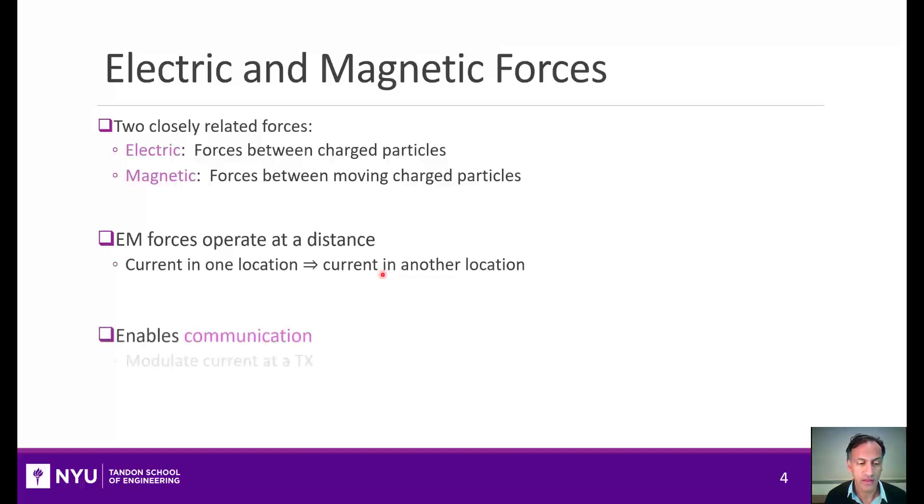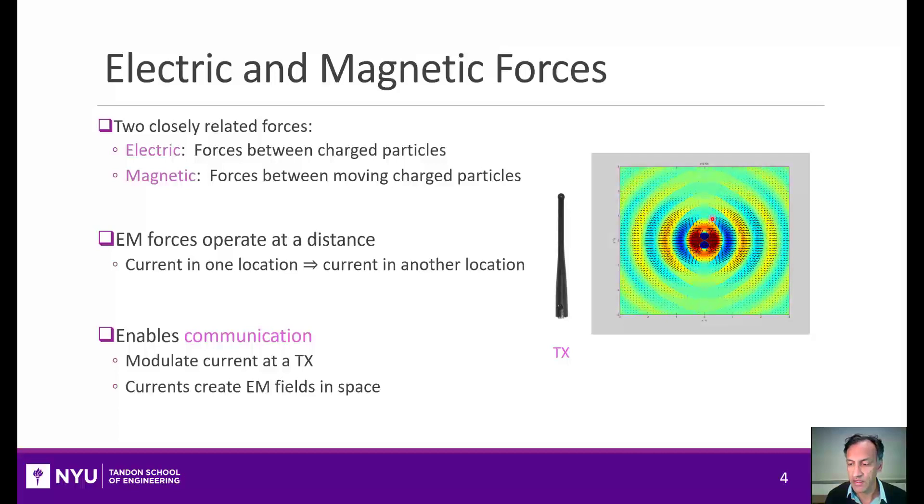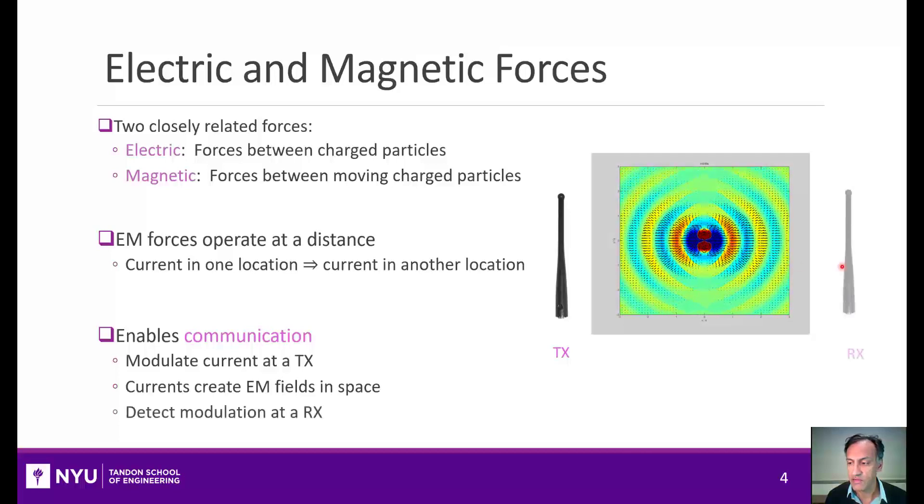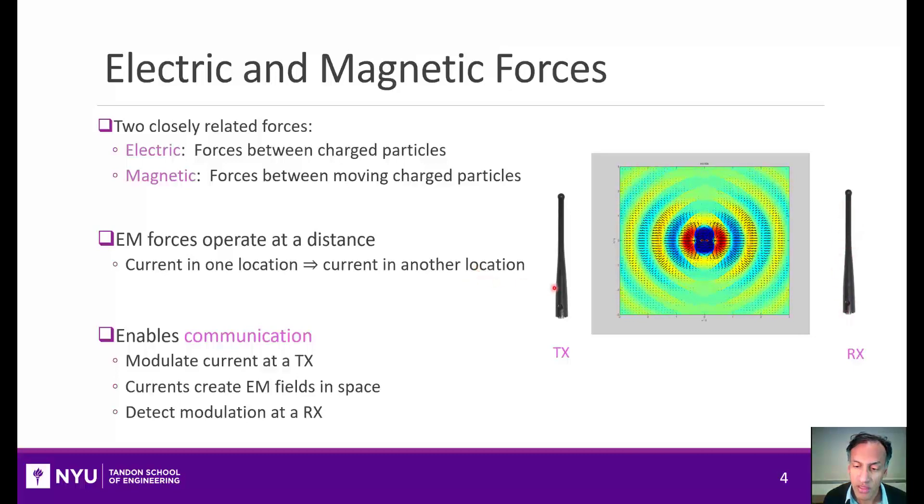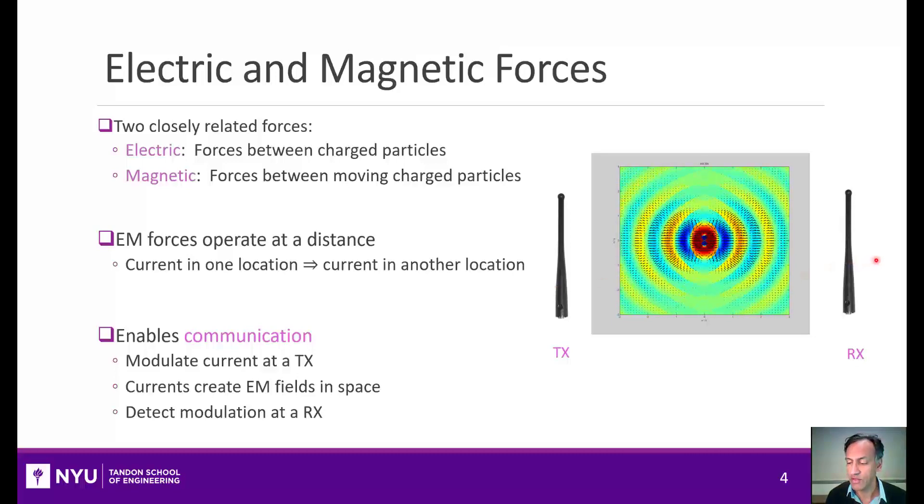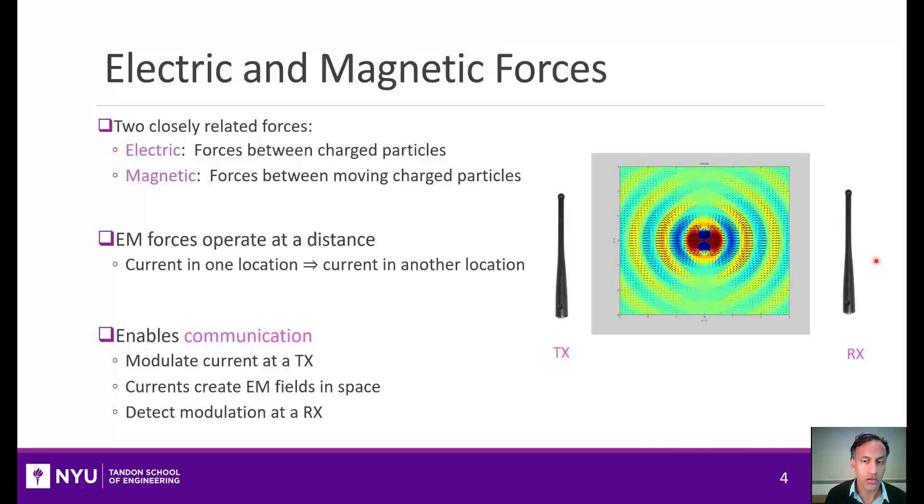Suppose we have a transmitter which is an antenna and in this antenna, I have a current and I modulate information onto that current. This current will generate an electromagnetic field in space and then at a distance, that will induce currents in the receiver. And if I can modulate the information I want in the transmitted signal hopefully I can detect it at the received signal and thereby communicate at a distance. This basic mechanism is what underlies all of wireless communications.